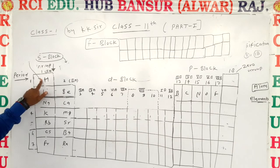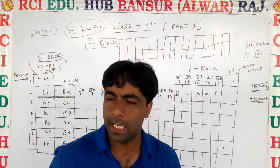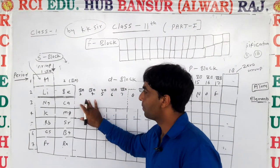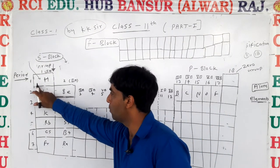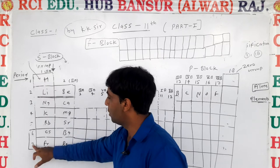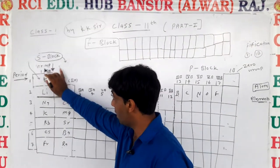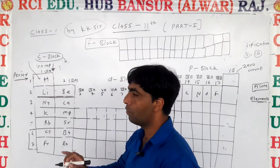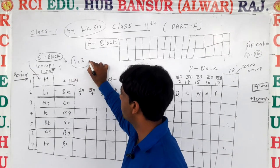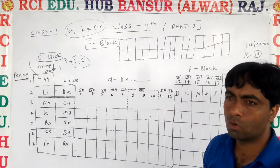First of all, we see S block elements. In S block elements, we represent according to period — you can see from period 1 to 7. According to group, groups 1 and 2 form the S block.